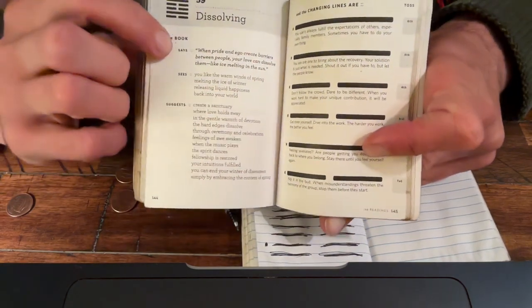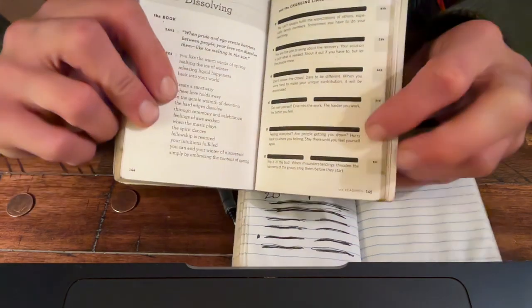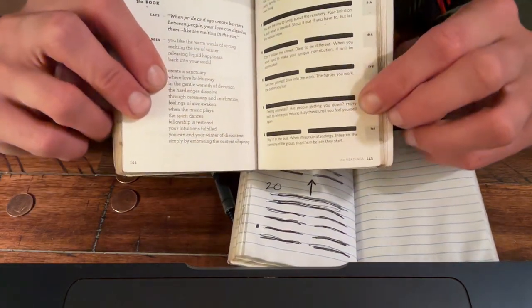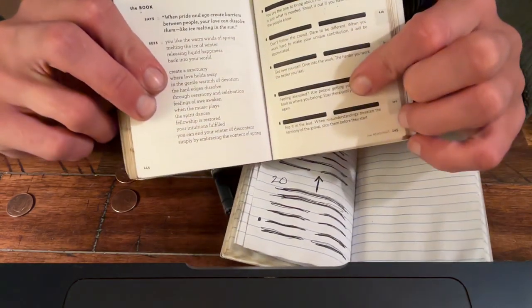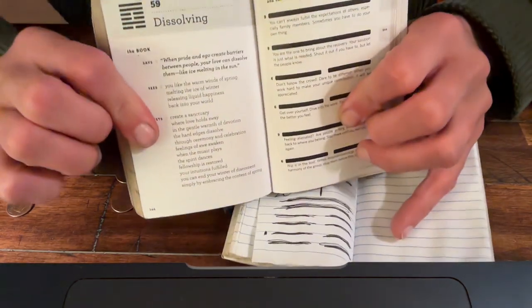Again, reading what the book says, sees, suggests, and second changing line, see what's there. That's very specific to you and your question and your situation. Now, that is how you do the divination.